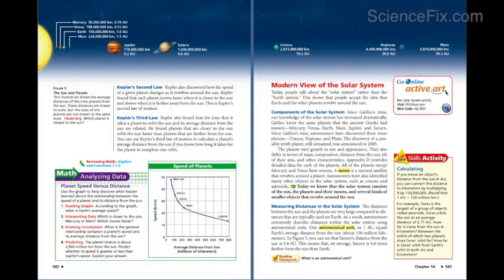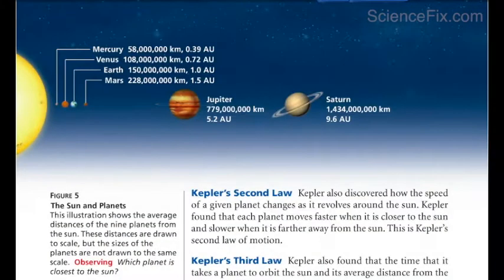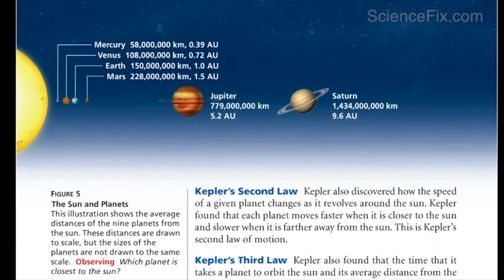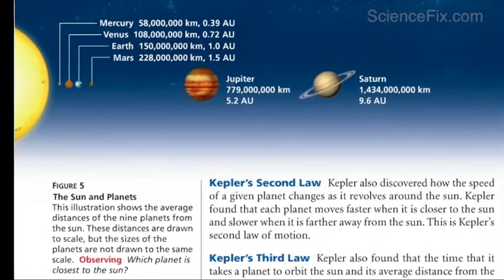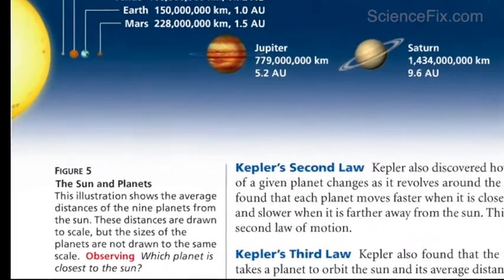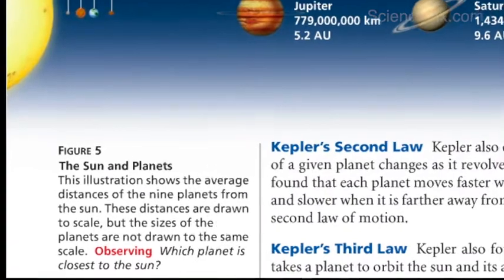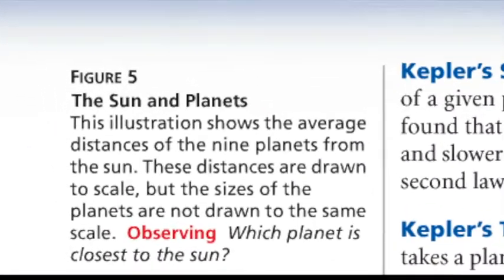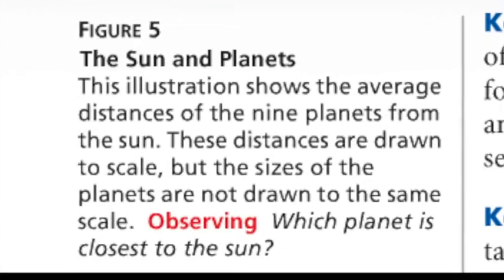Here's the textbook we use in my class. The top of the pages shown are the planets of the solar system and the sun. This is an up-close look at the inner planets and two of the outer planets, Jupiter and Saturn. This illustration shows the average distances of the nine planets from the sun. These distances are drawn to scale, but the sizes of the planets are not drawn to the same scale.